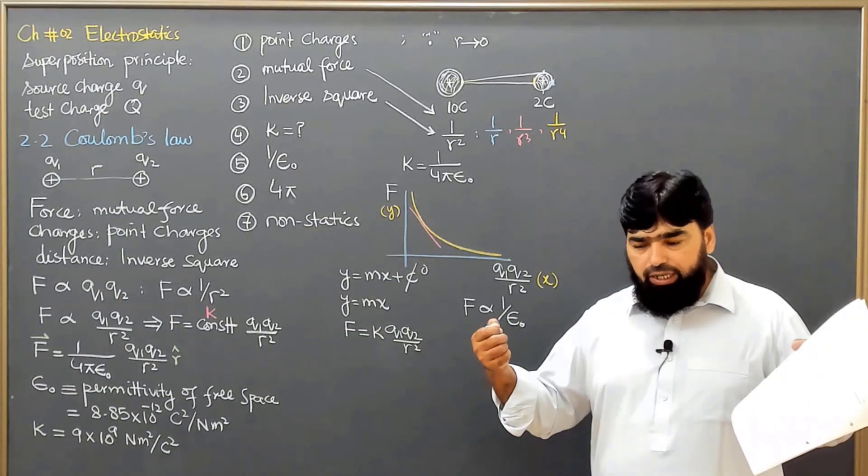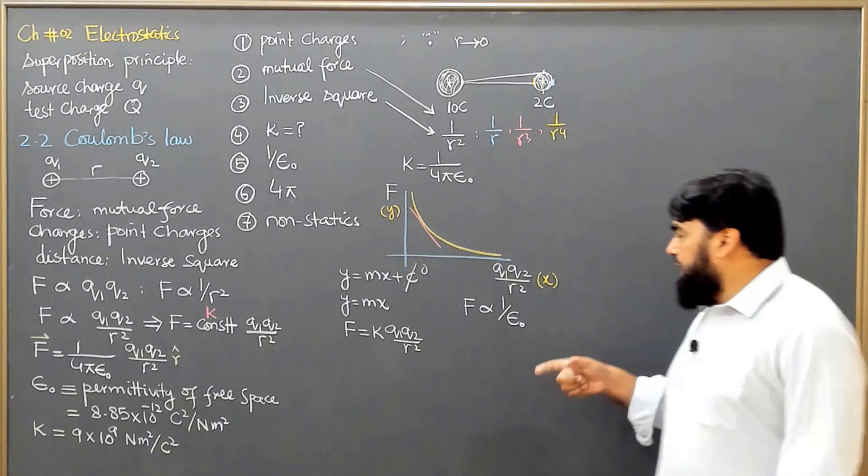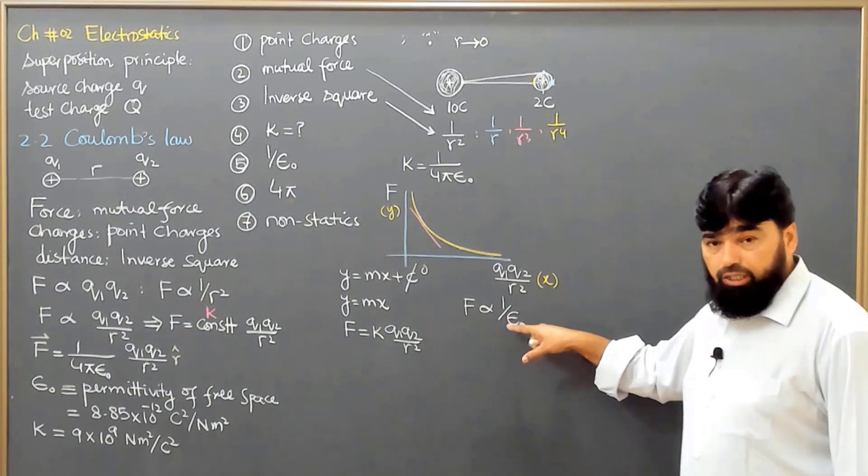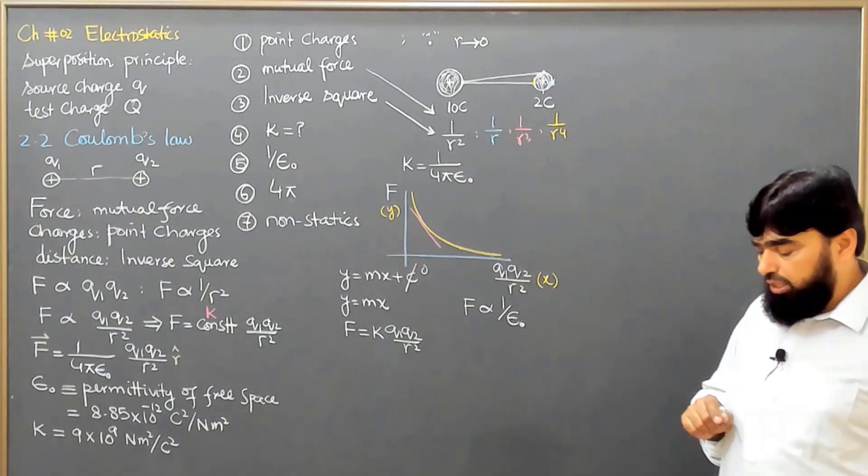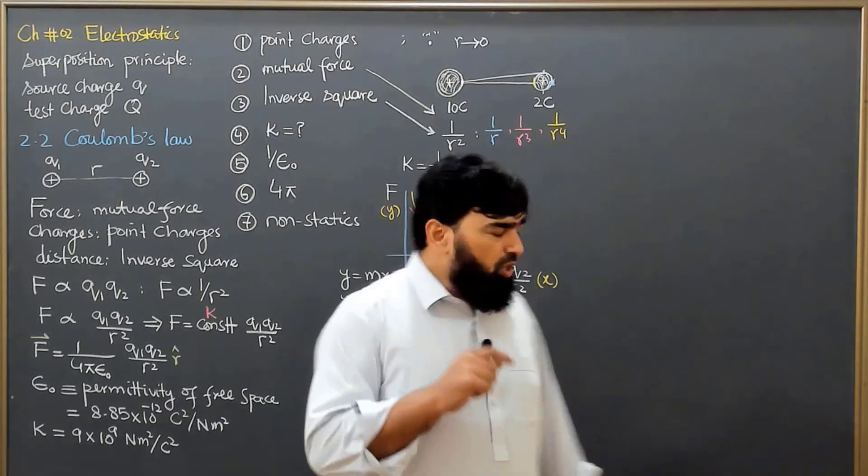Then when the permission is more, it means the two charges will be interacting very easily with each other and the force is supposed to be increasing. The force is to be more, but it is the opposite of it. It is 1 over epsilon naught.